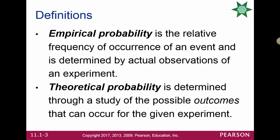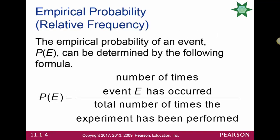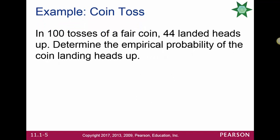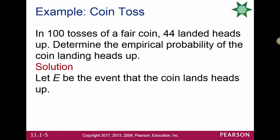We don't have to actually do the experiment for theoretical probability. For empirical probability, the probability of an event is determined using this formula: the number of times the event has occurred divided by the total number of times the experiment has been performed. For example, if we tossed a coin 100 times and got 44 heads, the empirical probability of a coin landing heads up would be 44 out of 100, or 0.44.